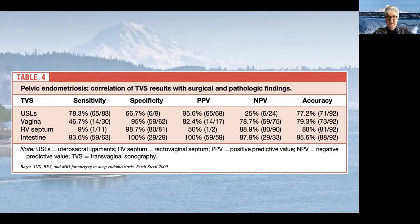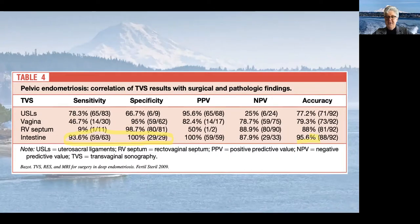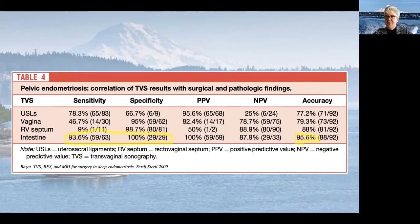Here is the correlation of transvaginal ultrasound with surgical and pathological findings. The sensitivity and specificity for the intestine are 93 and 100% respectively, giving it a 95% diagnostic accuracy, a 100% positive predictive value and 87% negative predictive value — which is pretty impressive. Not every study looking at transvaginal ultrasound has numbers quite this high, but most are above 90%, typically about 95%.